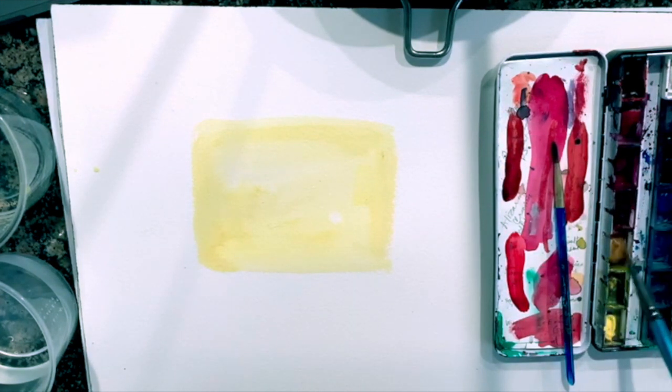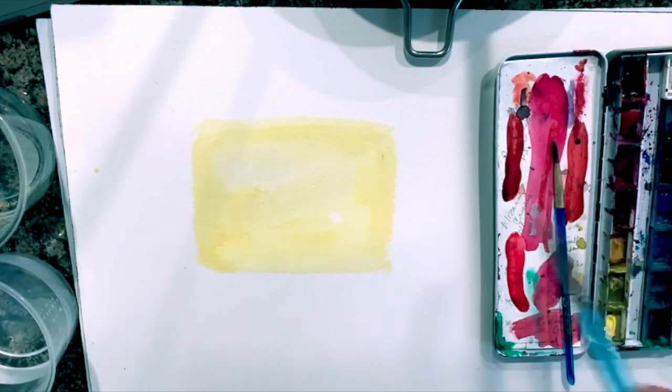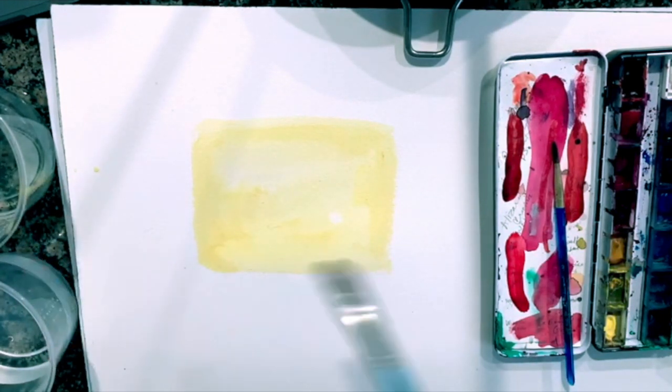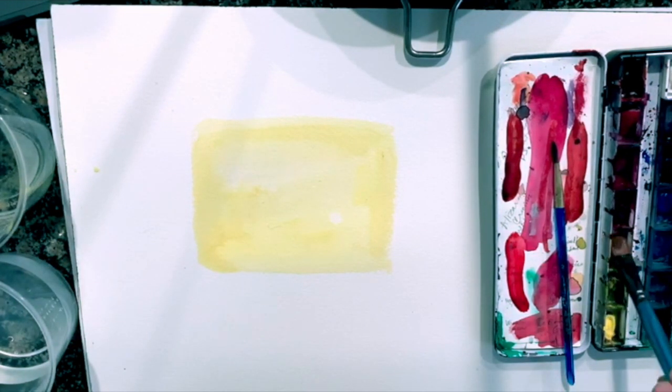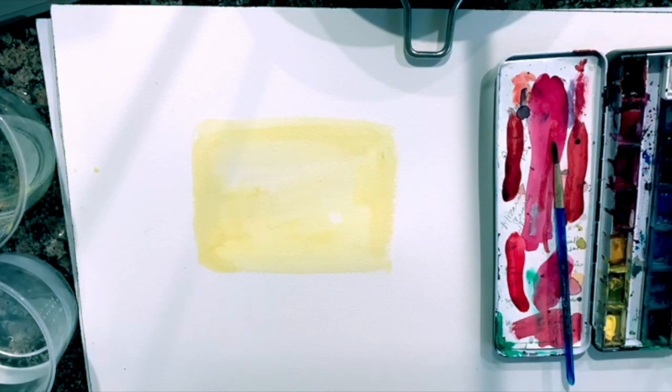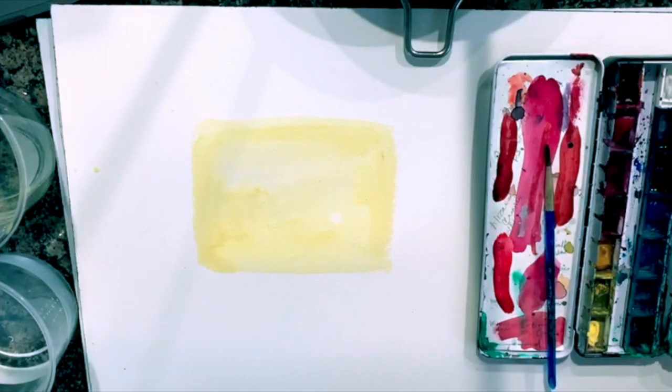So what we did was put some yellow down and then we took a paper towel and dotted a circle where you want the sun to be. So if you want to do that just grab your paper towel and twist it and pick up the paint where you want your sun to be. So you just pick up that color with a paper towel.